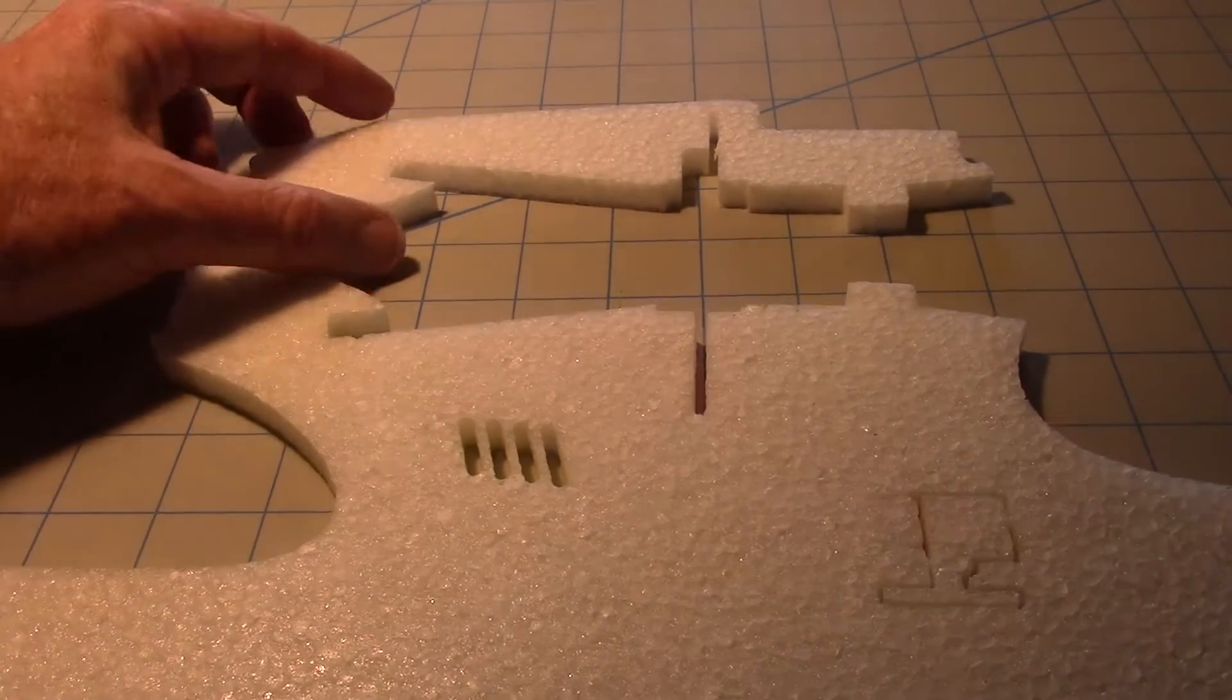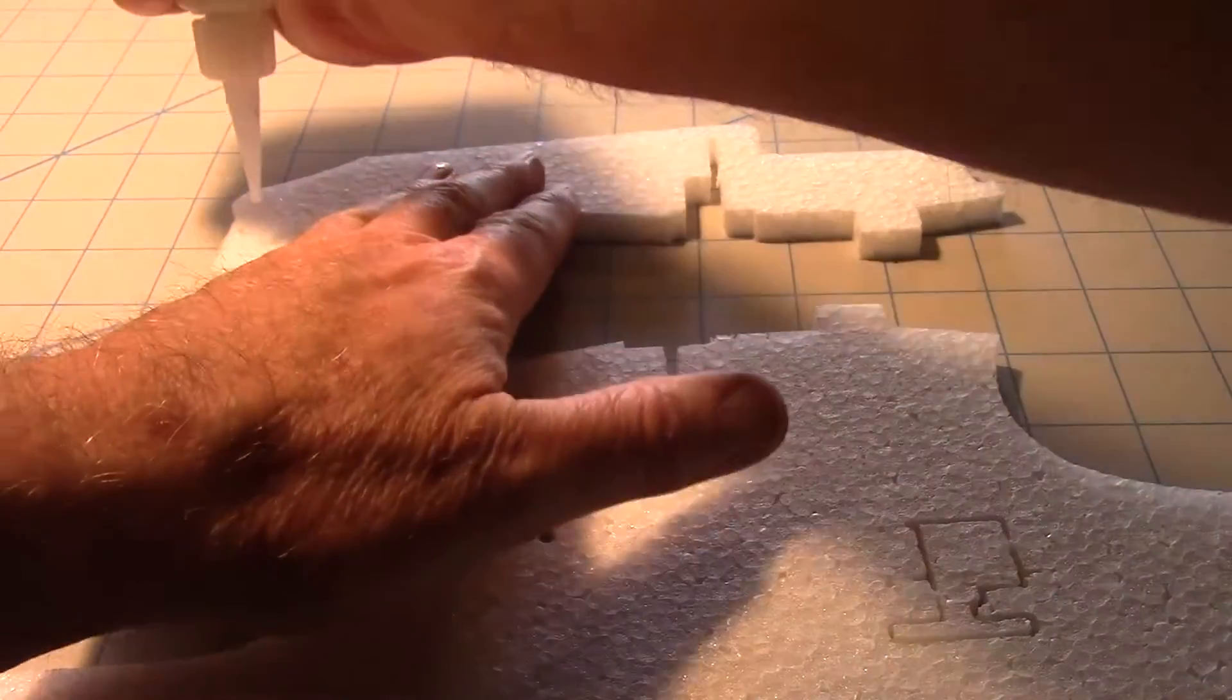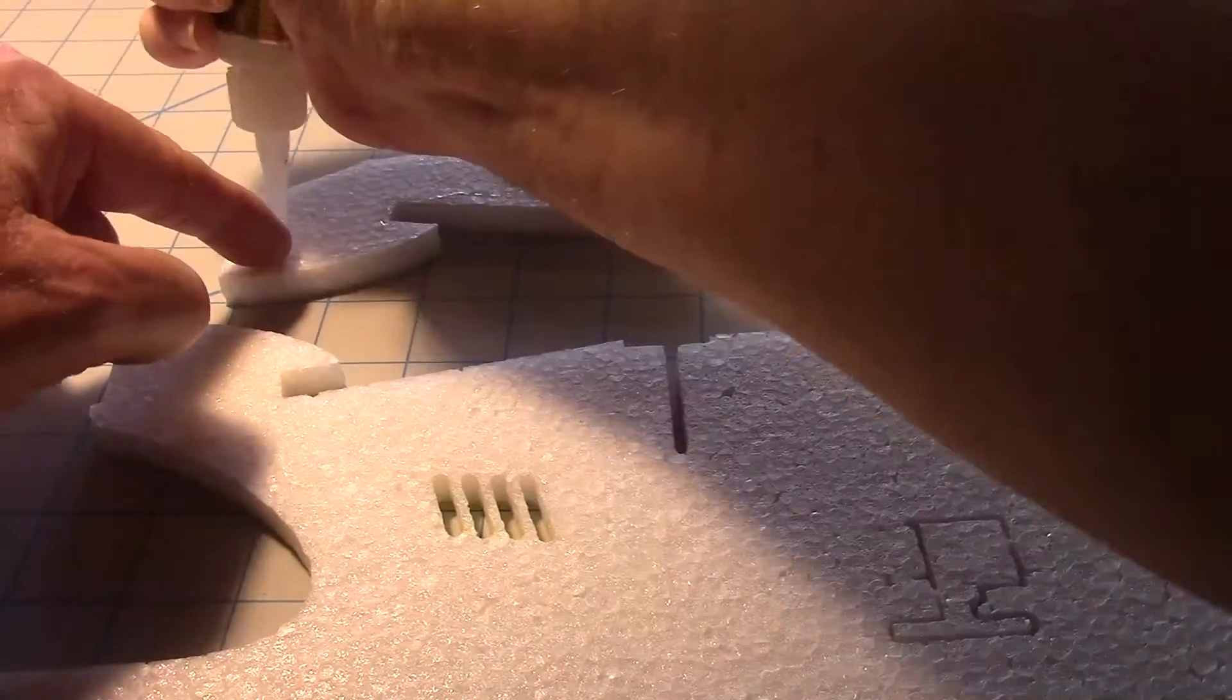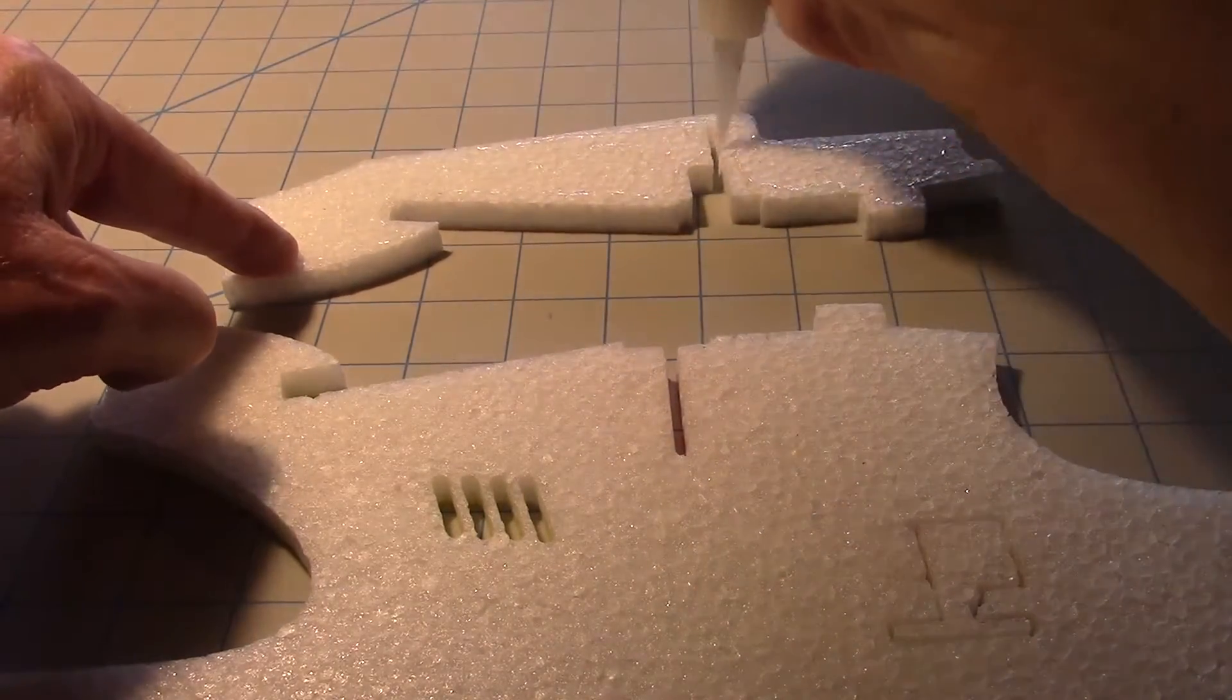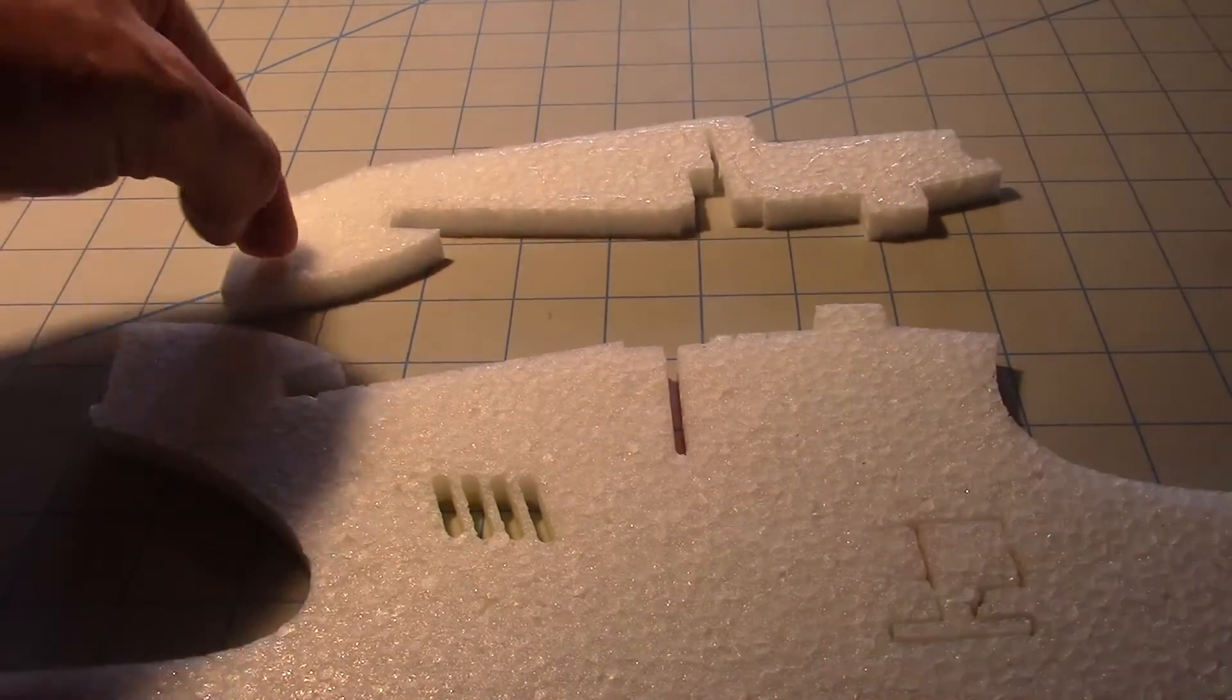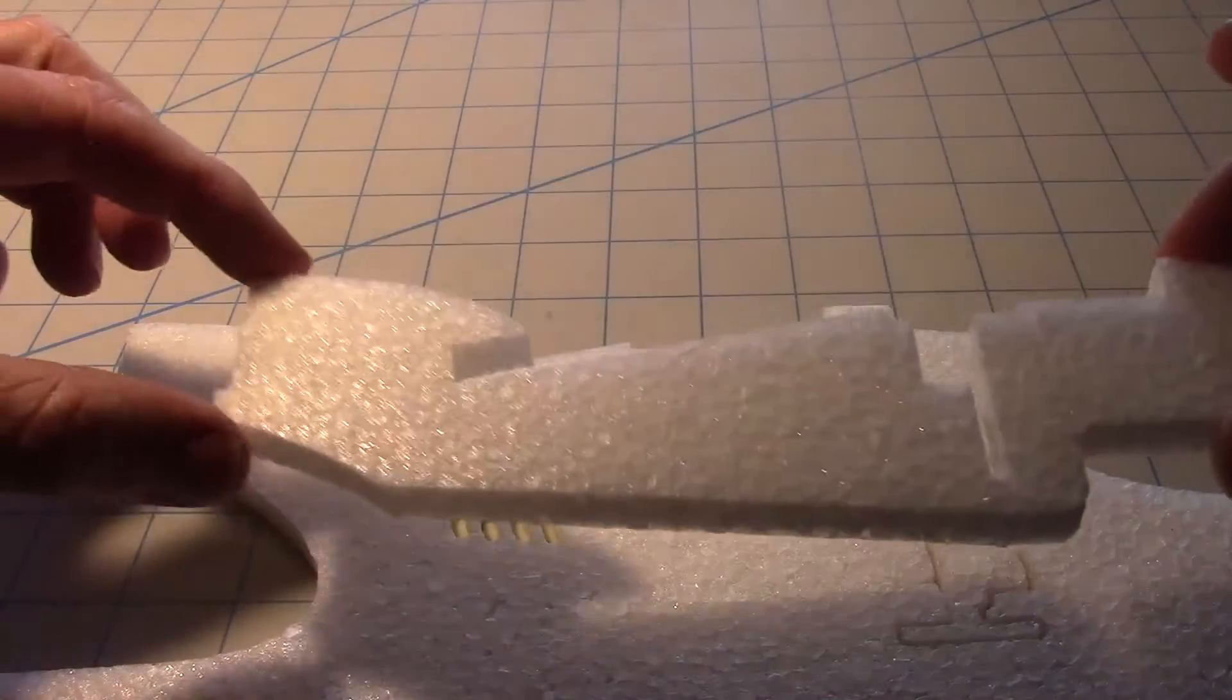Just applying glue to the top piece here. This contains the motor mount and other items. Then just do this.